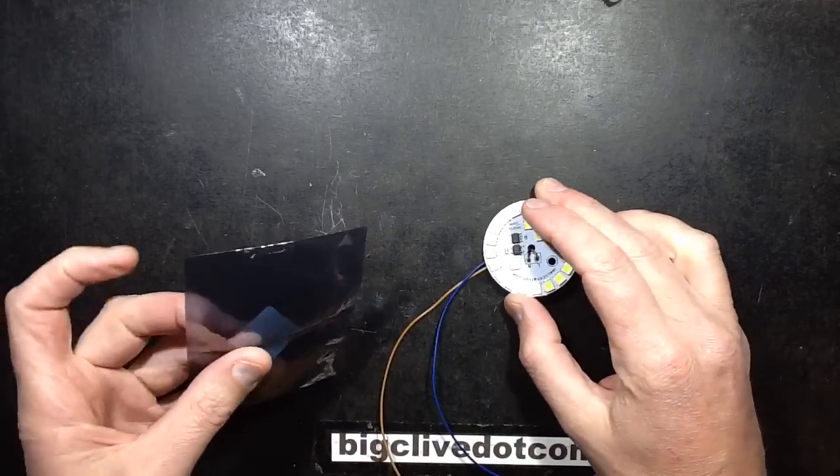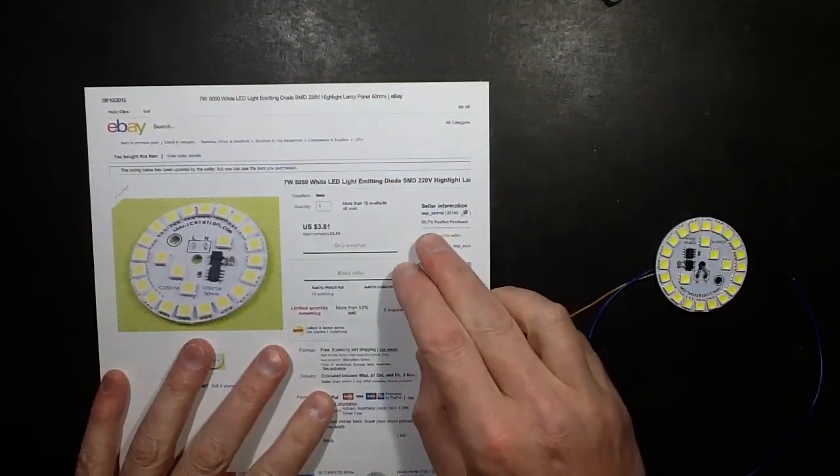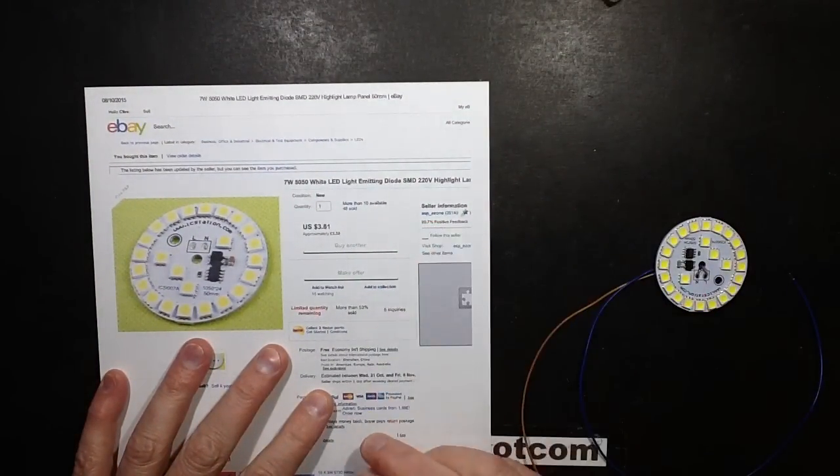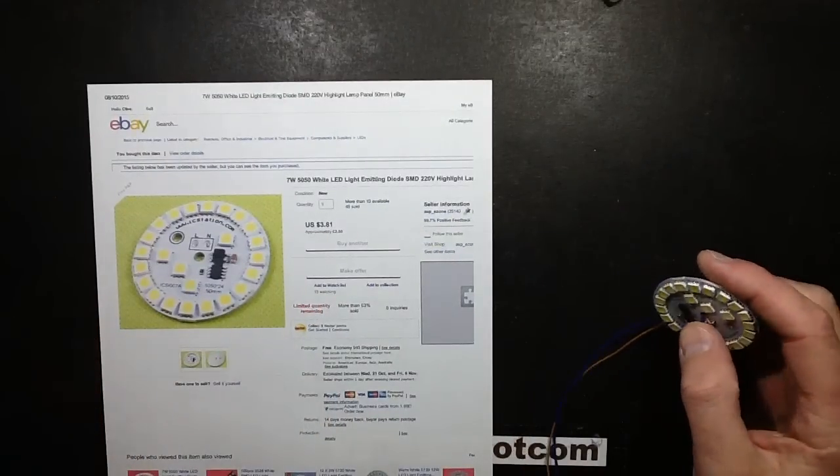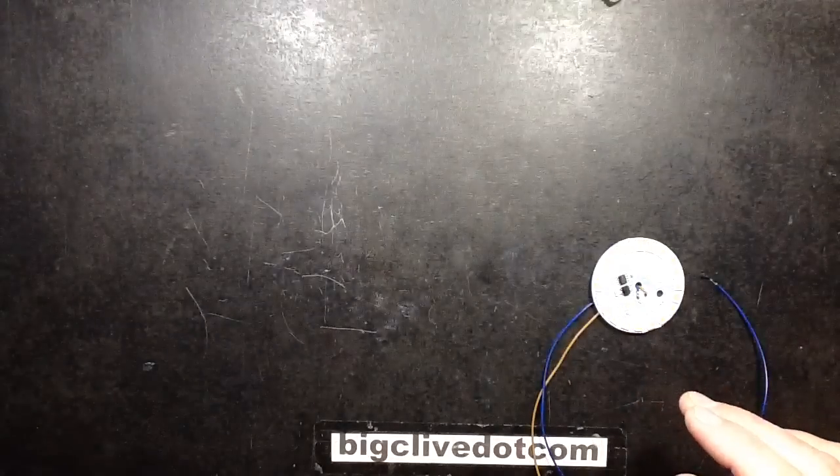So it came in anti-static packaging, which is nice, and it came from a seller called ESP_E-zone and it was £2.50. That's all right, it's not a bad price at all for an LED module and it came through quite quickly.